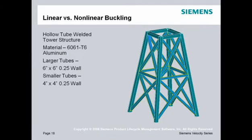There have been some questions on the FEMAP Yahoo group recently regarding linear versus nonlinear buckling. I'm going to use this sample model of a simple tower structure. It's basically 6061-T6 aluminum, with 6x6 tubes and 4x4 cross-stiffeners. We usually use this model as an introduction to FEMAP and FEA modeling.